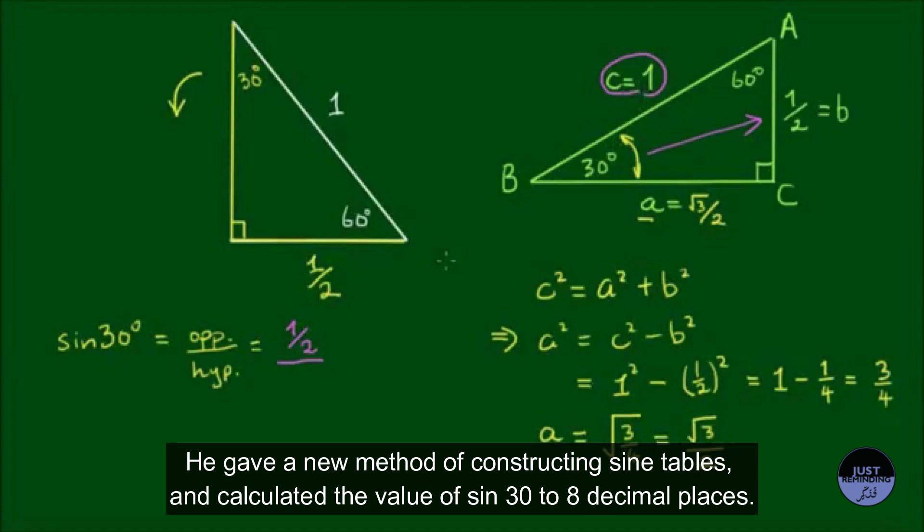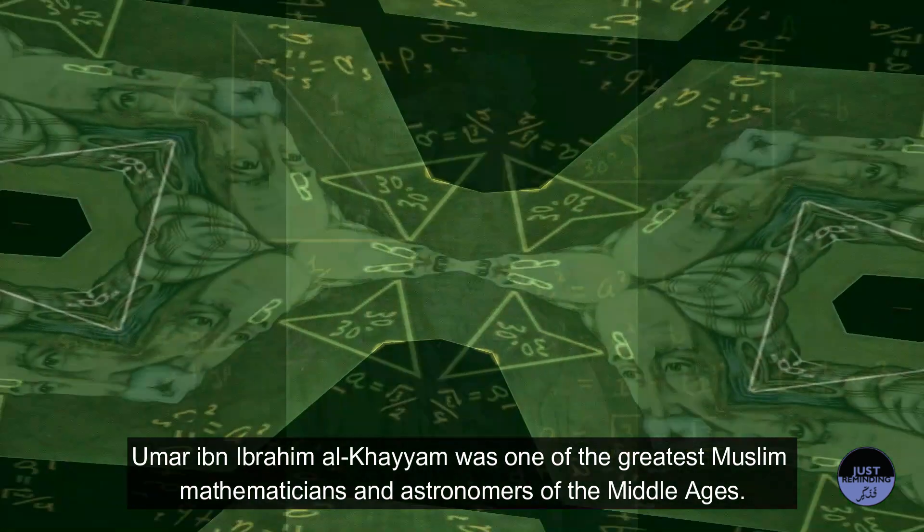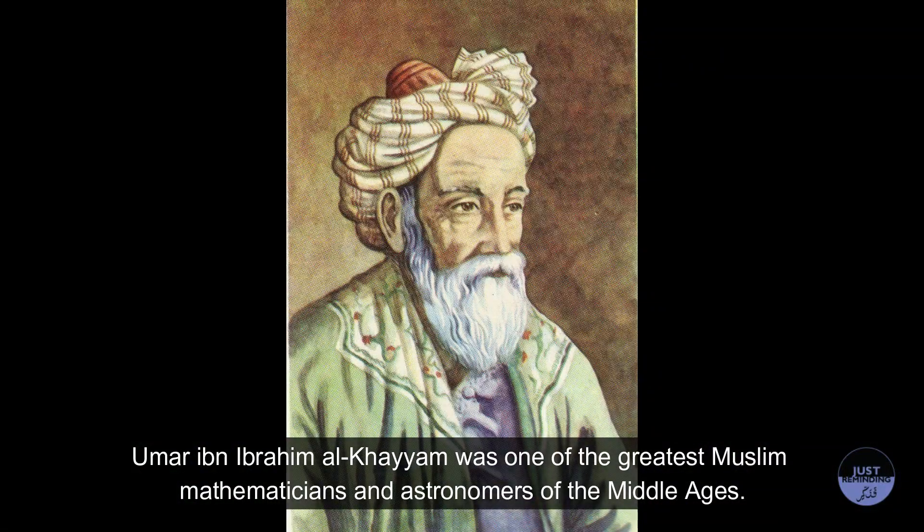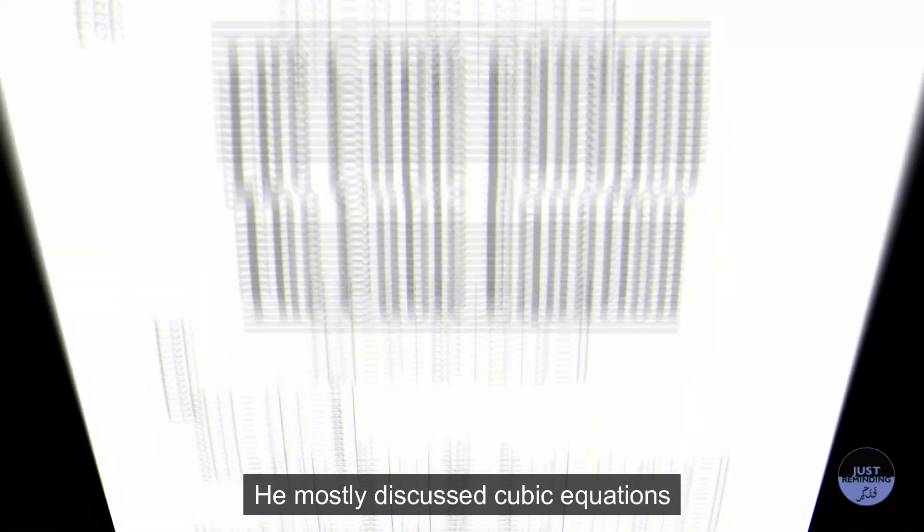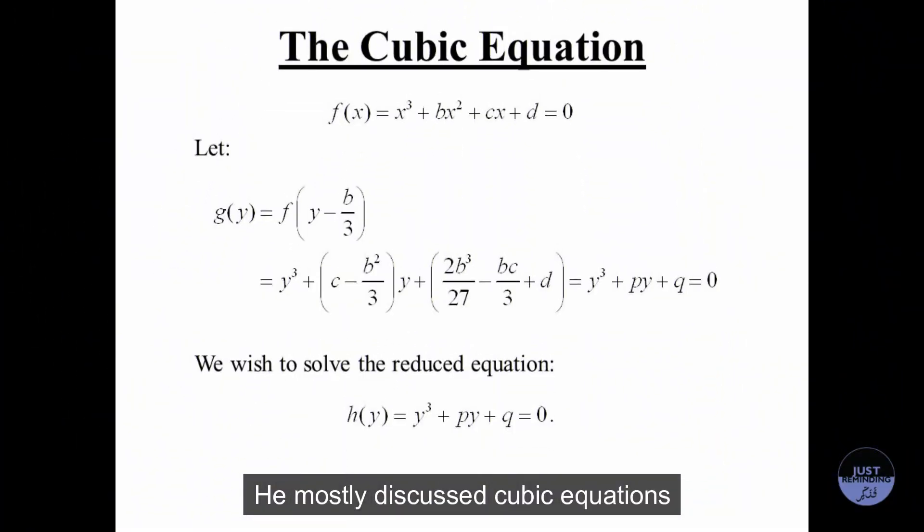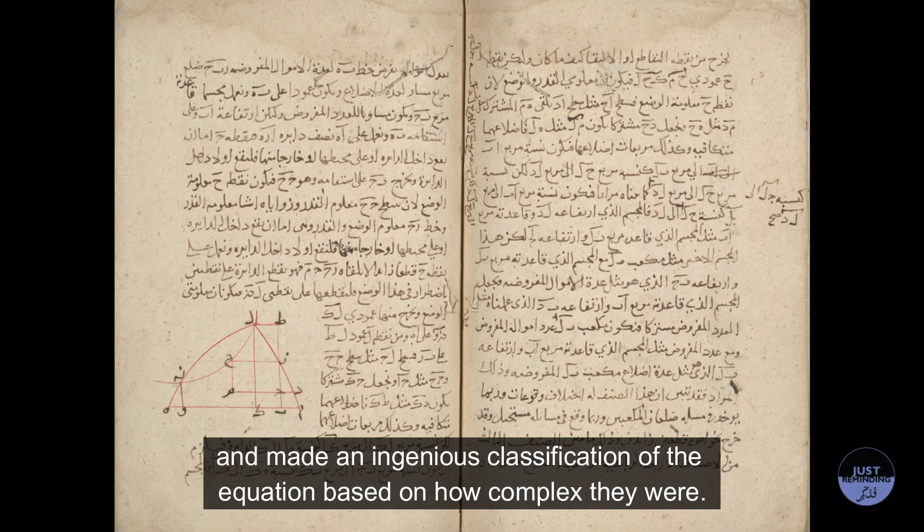Umar Ibn Ibrahim Al-Khayyam was one of the greatest Muslim mathematicians and astronomers of the Middle Ages. He discussed cubic equations and made an ingenious classification of equations based on their complexity.